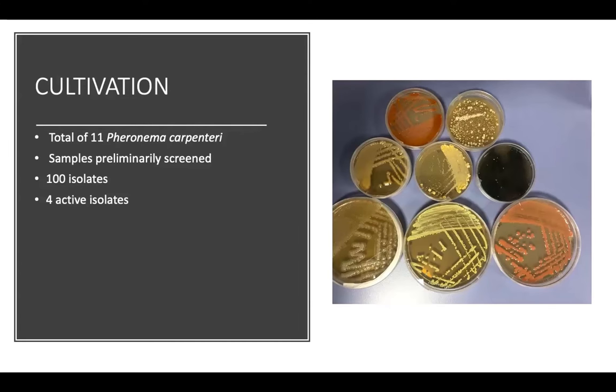This has been identified through the use of cross streaks and agar overlay assays. The cross streaks consisted of testing common ESKAPE pathogens, both Gram negative and Gram positive: M. luteus, Staph aureus, E. faecalis, Pseudomonas aeruginosa, E. coli, Klebsiella pneumoniae and Acinetobacter baumannii. Agar overlays were done with M. luteus as the pathogen of choice.